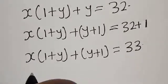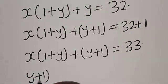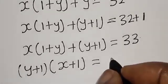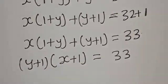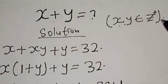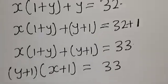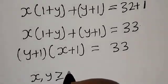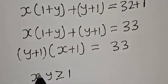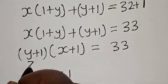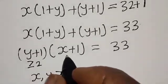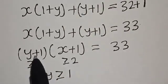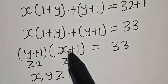Now (1 plus y) is common here. Bringing it out, we have (y plus 1) times (x plus 1) is equal to 33. Now remember that x and y are positive integers, so x, y are greater than or equal to 1. That means y plus 1 is greater than or equal to 2, and x plus 1 is greater than or equal to 2.